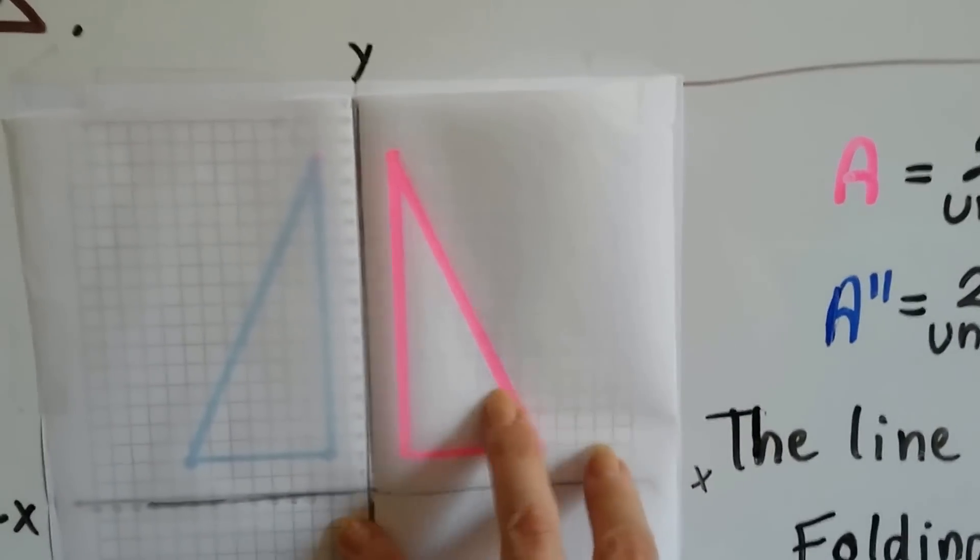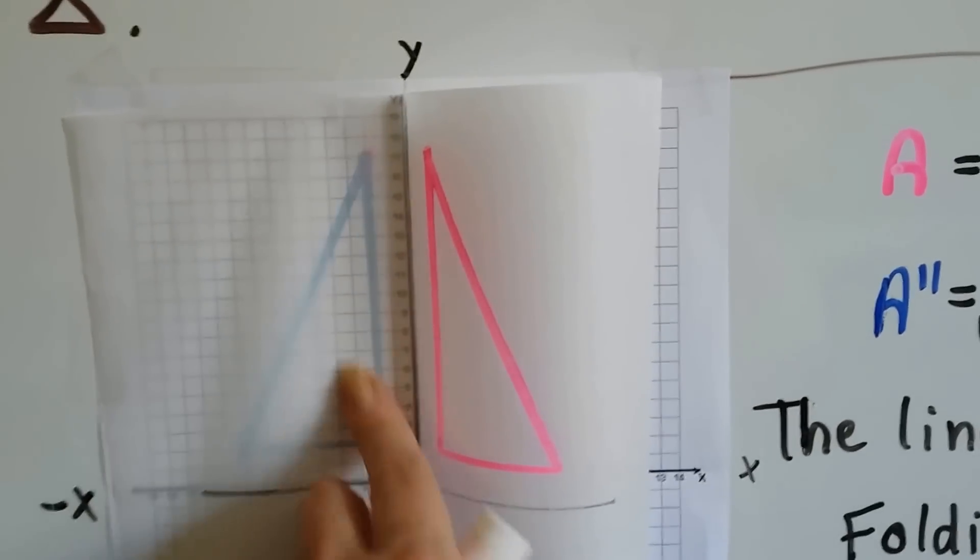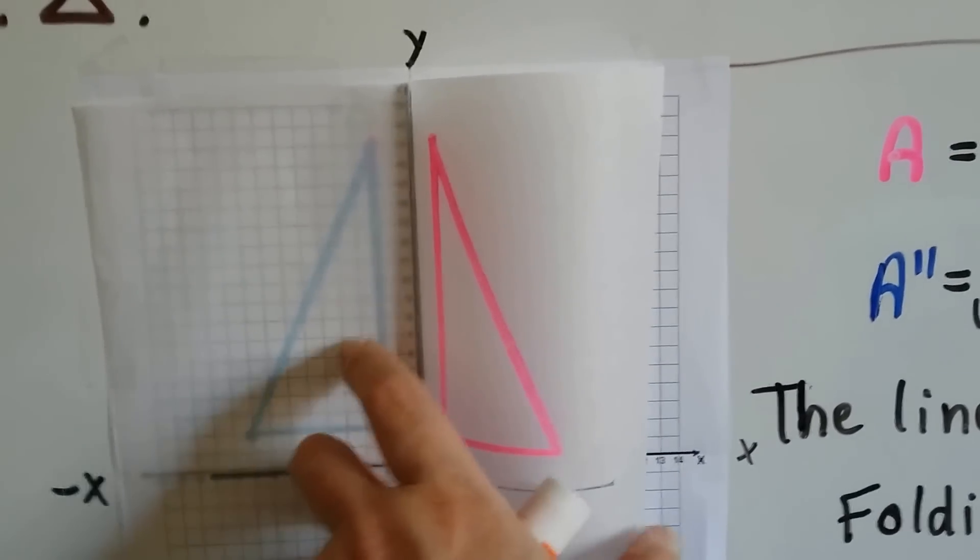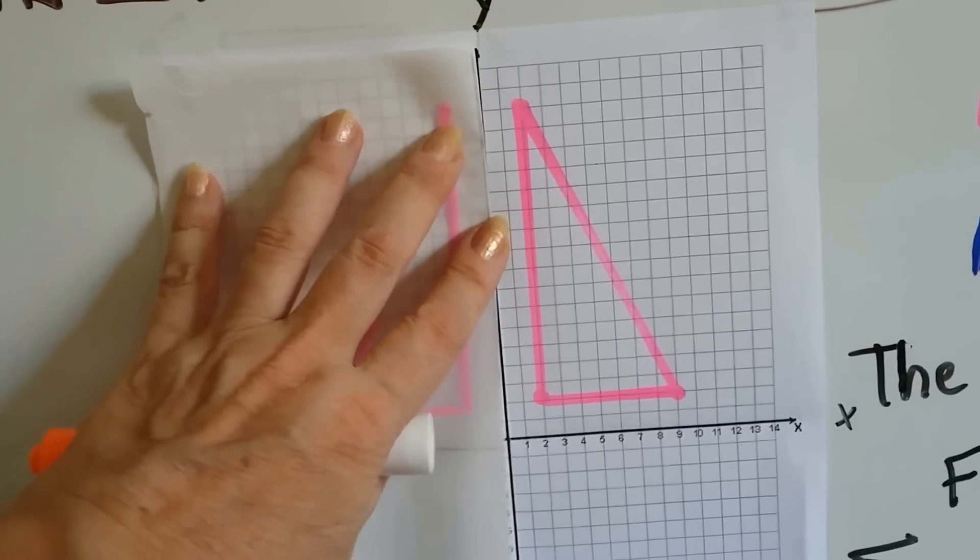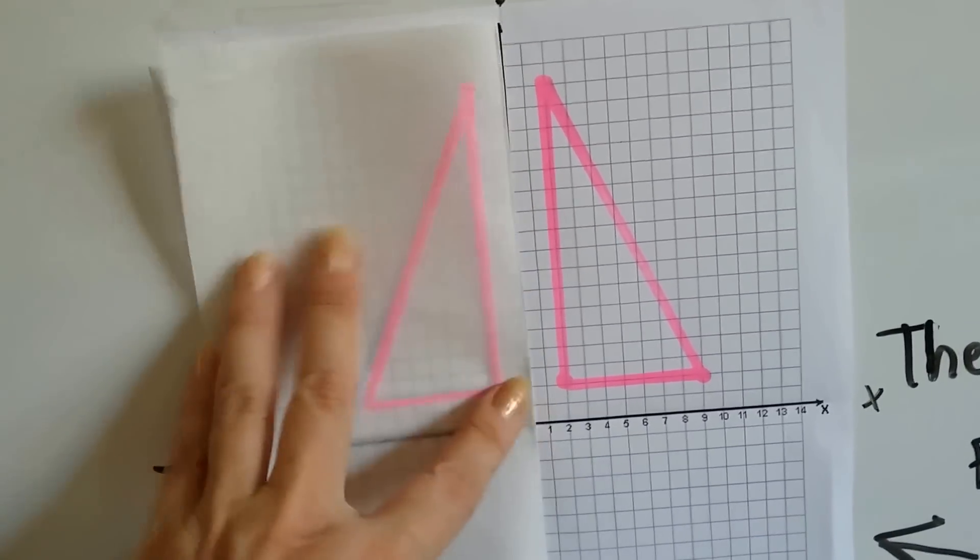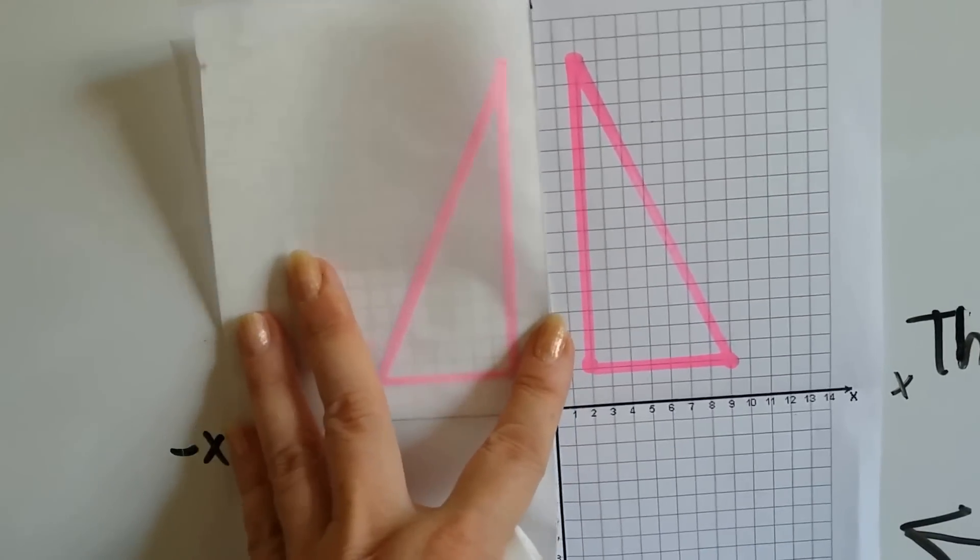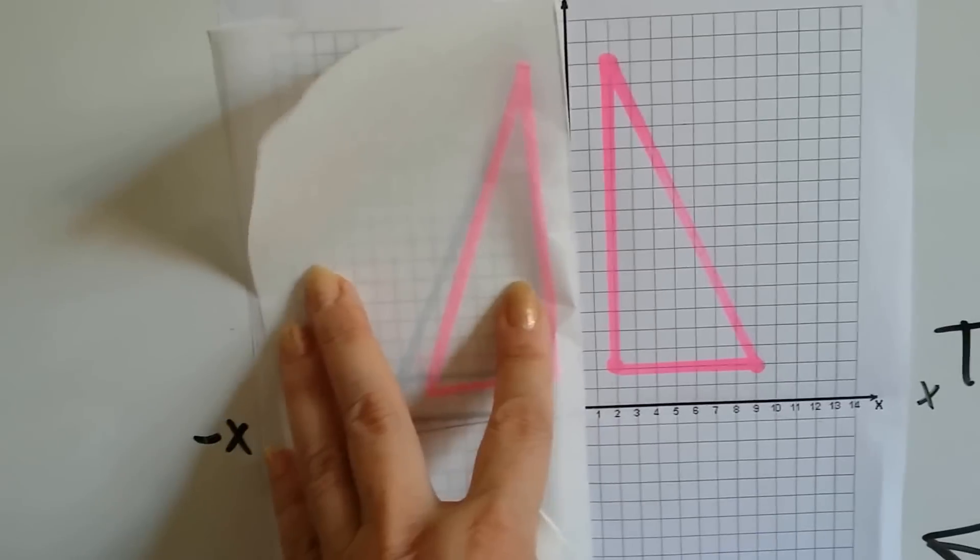And then I drew the triangle on the tracing paper. Now here's the blue triangle underneath it. And when I flip the tracing paper over, folded right along the y-axis, it lines up perfectly with the blue one. Can you see the blue one underneath there?